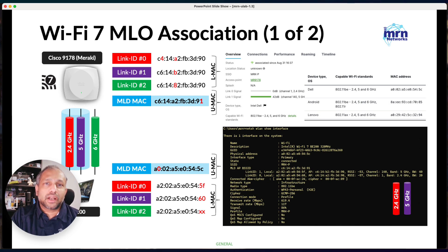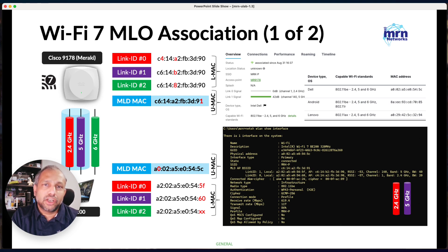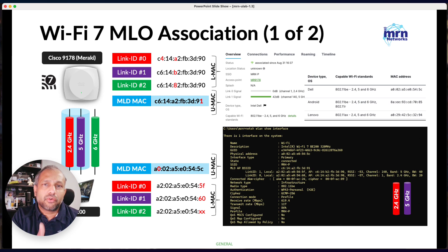In a Wireshark packet capture, the client does not use the MLD MAC address to send authentication frames or re-association frames — those use the individual link-level MAC addresses. So if you want to filter client traffic in Wireshark, you need to use the individual link-level addresses, not the MLD MAC. If you filter by MLD MAC address, you may not see much traffic, because link-specific communication uses link-specific addresses.